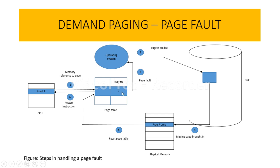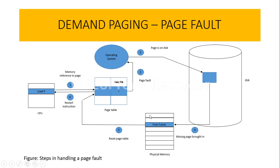Initially, whenever we are loading the program onto the CPU for processing, the first thing the CPU is going to do is check the memory reference of the page. That means it is going to check the page table for the particular page. If the memory reference given in the page table is invalid, then the operating system is going to terminate the process.